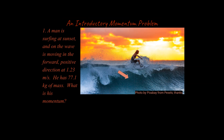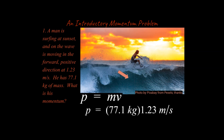Let's do a simple introductory problem. We've got a surfer with a forward direction defined as positive. He's moving in that direction at 1.23 meters per second and has 77.1 kilograms of mass. What is his momentum? It's as simple as plugging those values in. Notice we use a lowercase p for momentum — don't confuse that with uppercase P, which represents power.